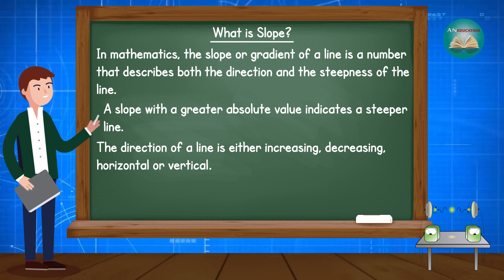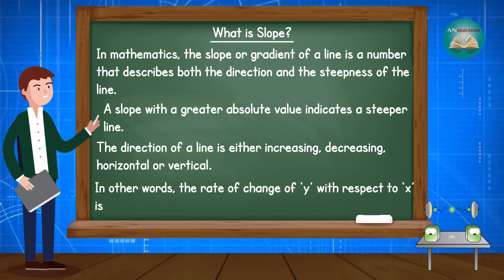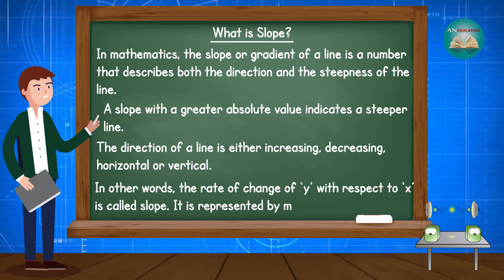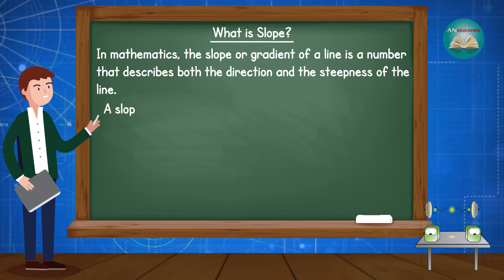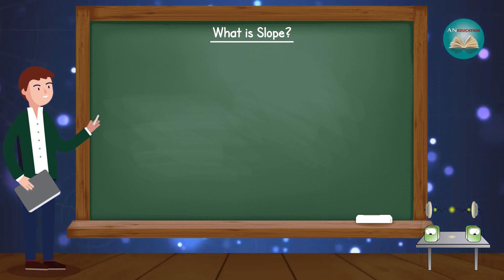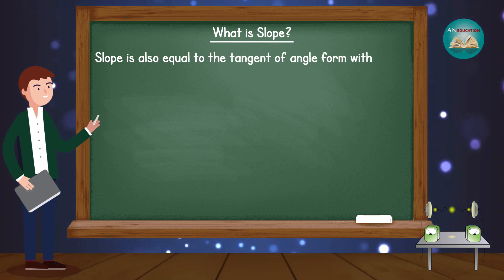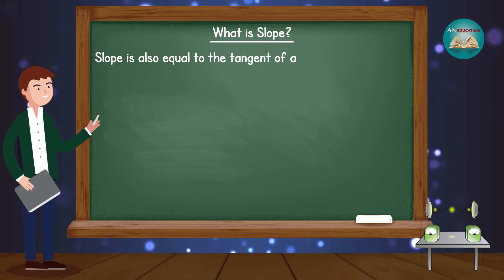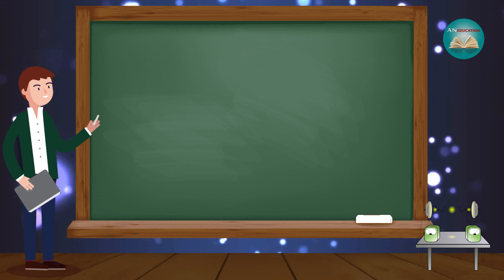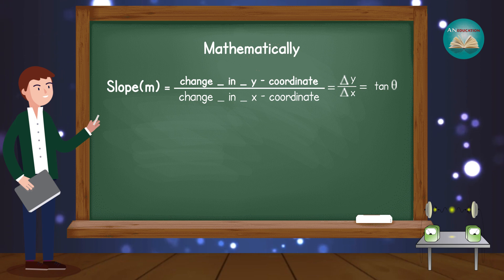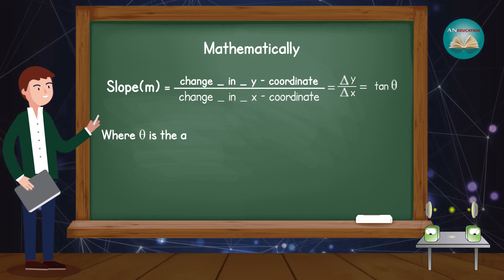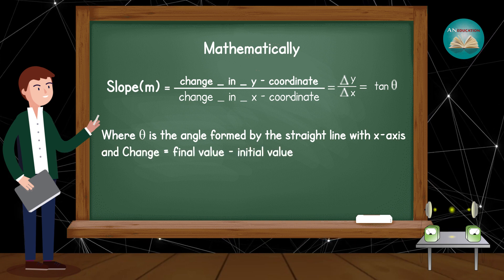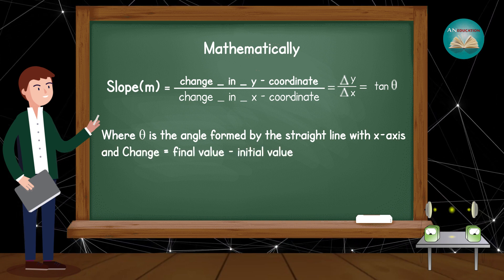In other words, the rate of change of y with respect to x is called slope, and it is represented by small m. The mathematical definition of slope is that slope equals the tangent of the angle formed with the x-axis. The formula is: slope m = change in y divided by change in x = Δy/Δx = tan θ, where θ is the angle formed by the straight line with the x-axis. Change equals final value minus initial value.